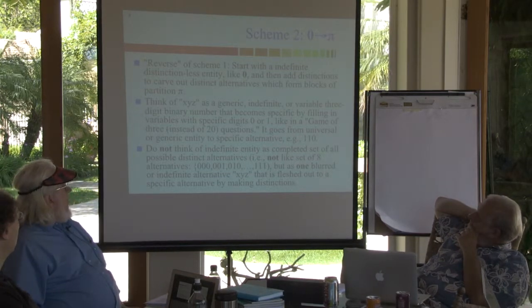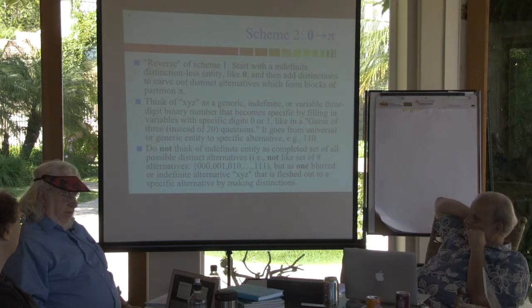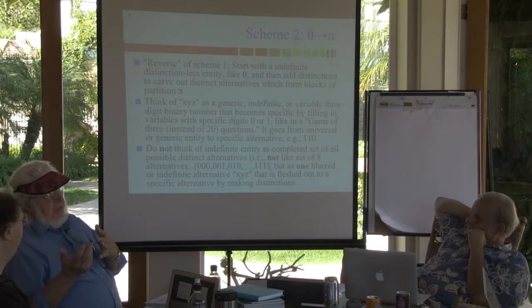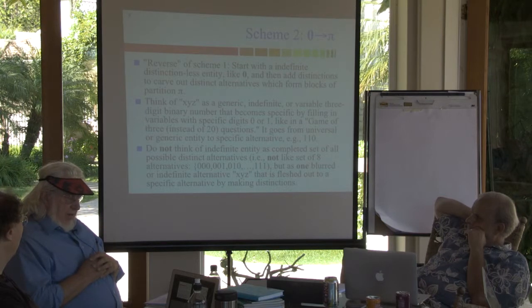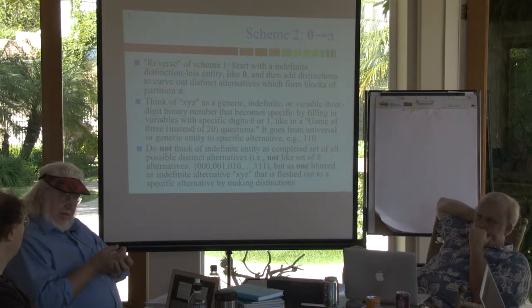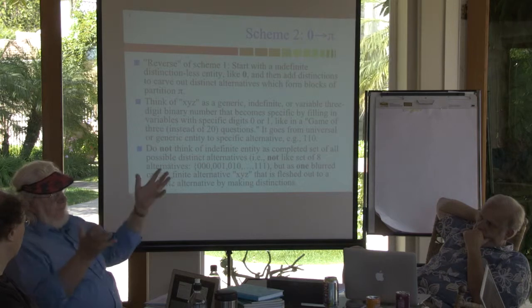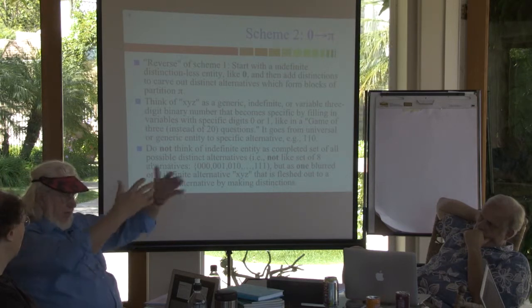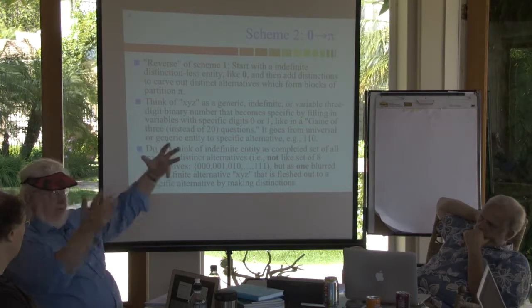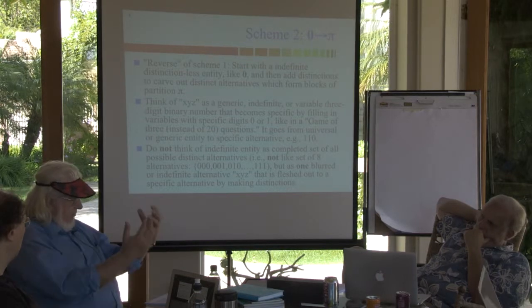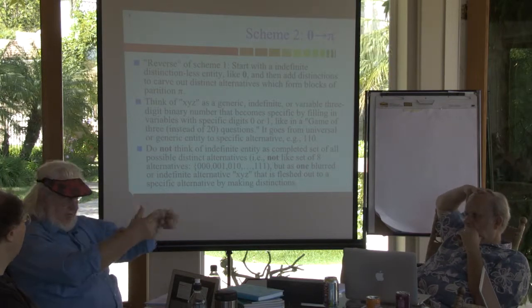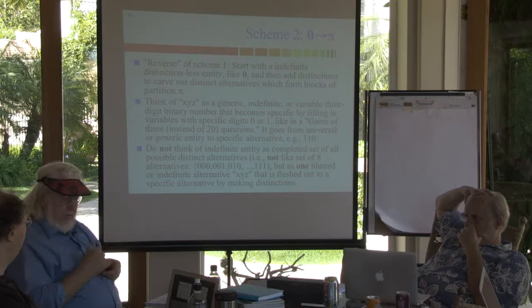Scheme two: remember back to the bottom of the partition lattice. The bottom is where everything is already identified — what we call the blob, or the indiscrete partition in mathematical terms. It's not nothing, it's everything, but everything in a totally undifferentiated state. The question is how do you unfold — how do you make distinctions to get something that's up in the middle of the lattice where you have distinctions? The first example was where you had all the distinctions and you kill some of them by identifying things. Now we're doing the opposite: starting at the bottom where all distinctions have been erased, and then you bring in distinctions and get to something in the middle of the lattice.